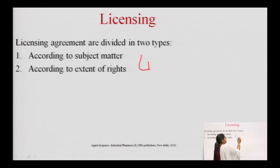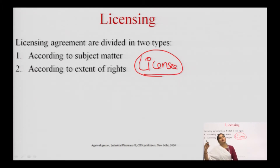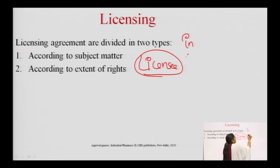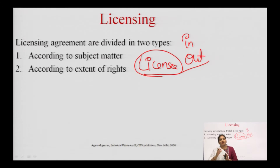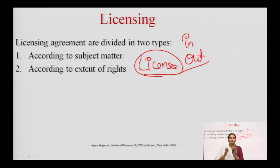A license is a document by which the licensor grants permission to use his technology to the licensee — the technology developer grants permission to use his technology for a certain period of time or for the whole life to the technology absorber or receiver. This licensing is of two types: licensing in and licensing out. In licensing in, the technology absorber takes full rights for the entire period. In licensing out, there is a fixed duration of time for which the technology absorber can exploit the technology.